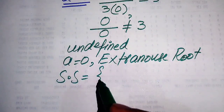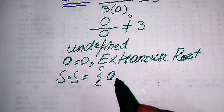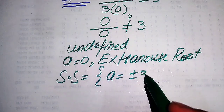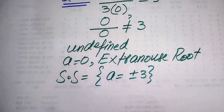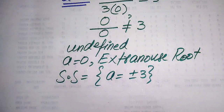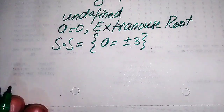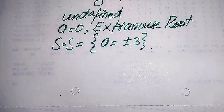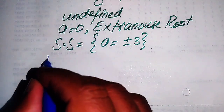Therefore the solution set of this question contains the two values that satisfy the given equation, and the solution set is a equals plus or minus 3. Now we move on to solve this problem using the second method.